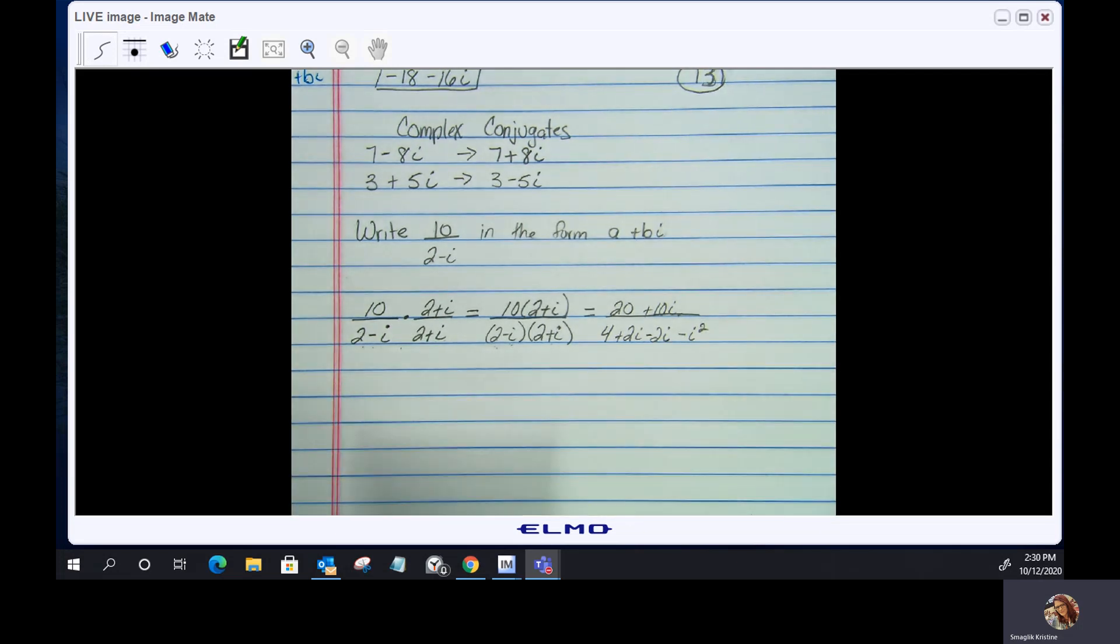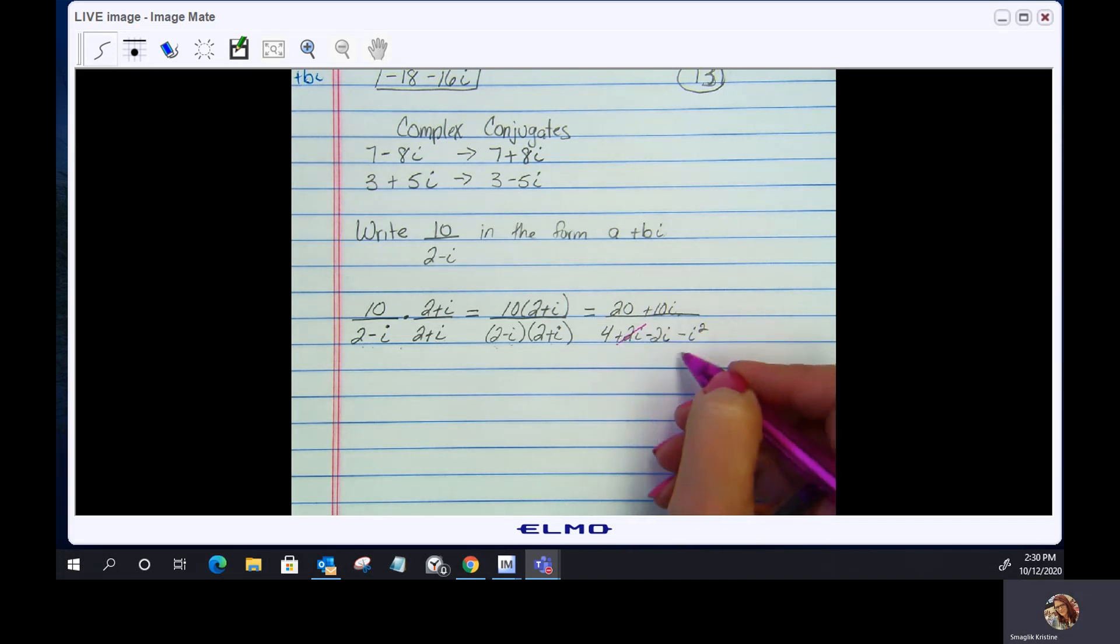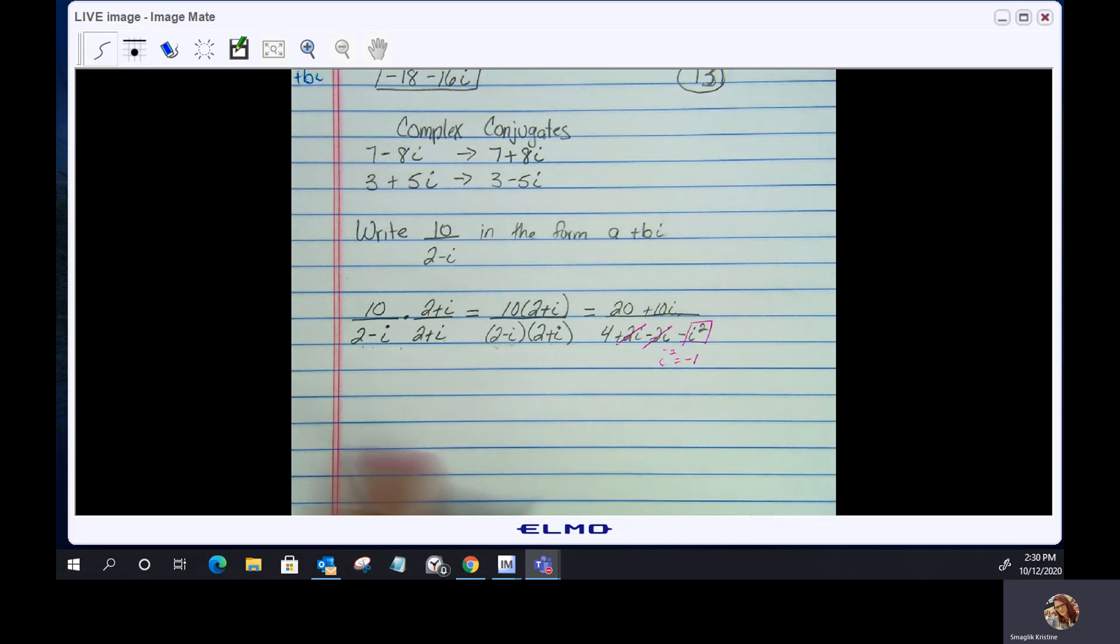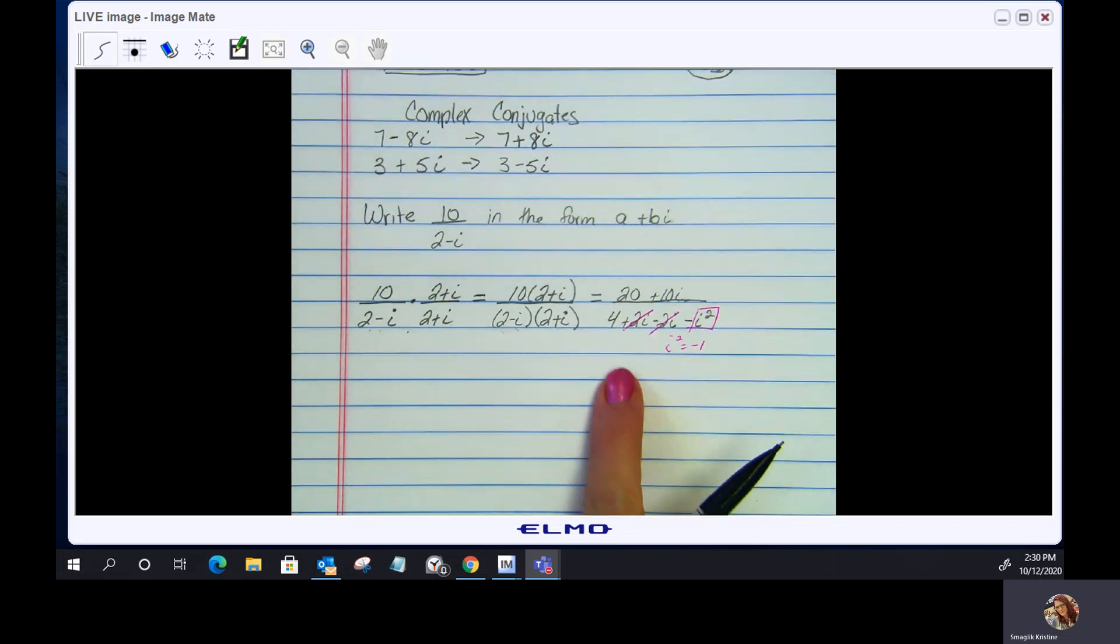Now we're going to clean it up. Positive 2i minus 2i reduces out. And remember, i squared equals negative 1.